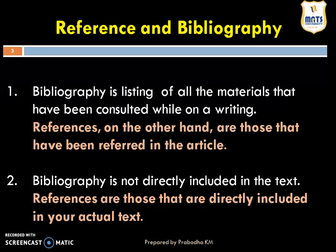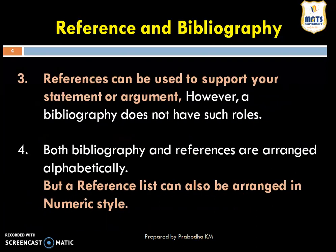The actual text means your actual scientific article that you are preparing or writing. The third difference is that references can be used to support your statement or argument. However, a bibliography does not have such a role — it cannot support any statement or argument that has been written in your scientific article.